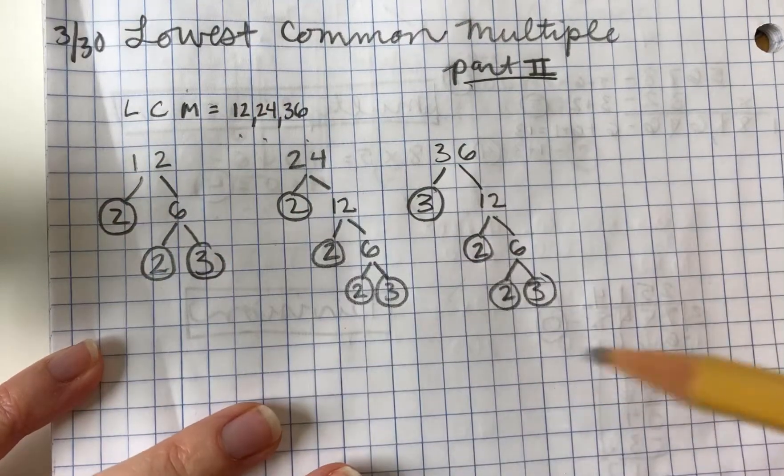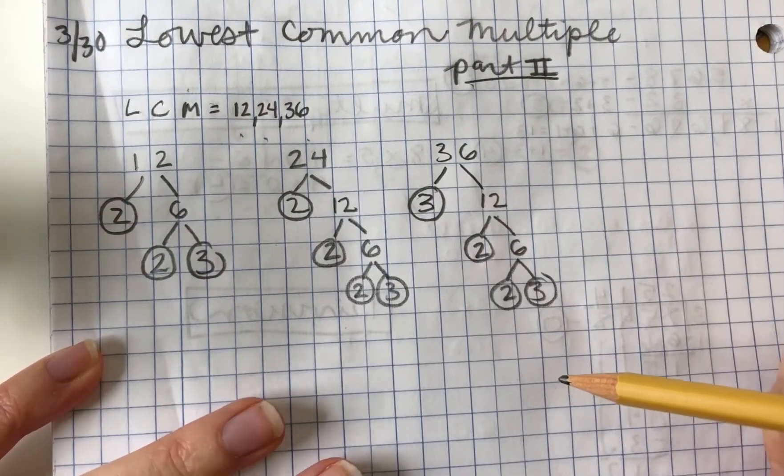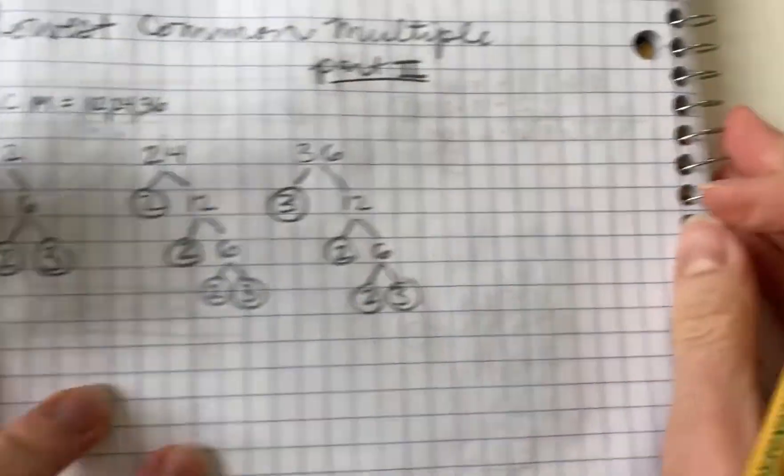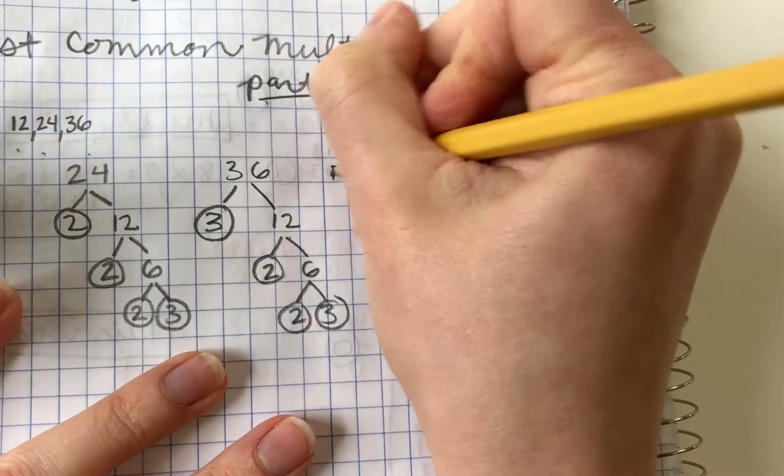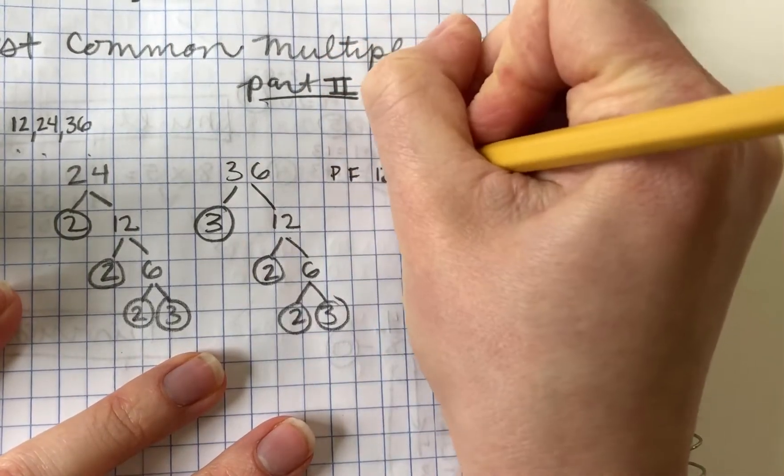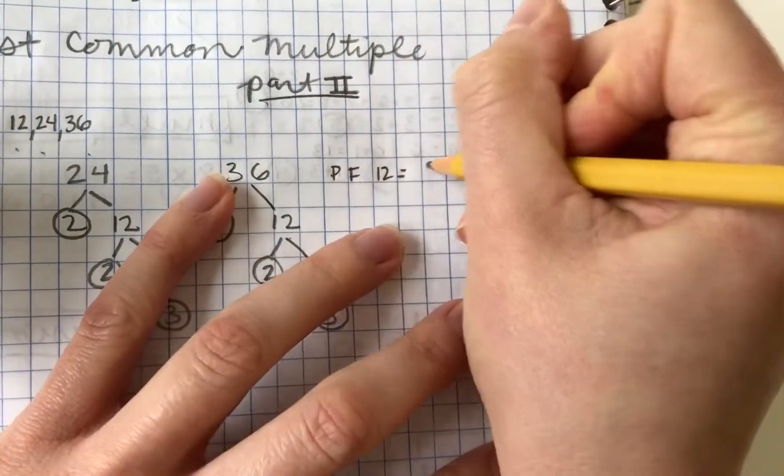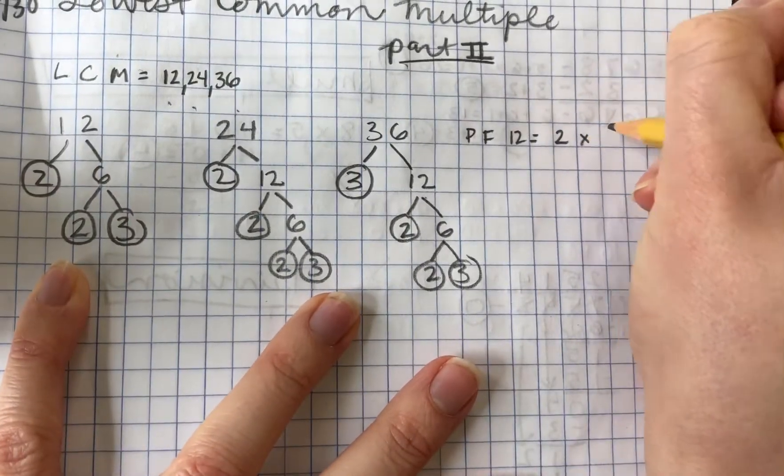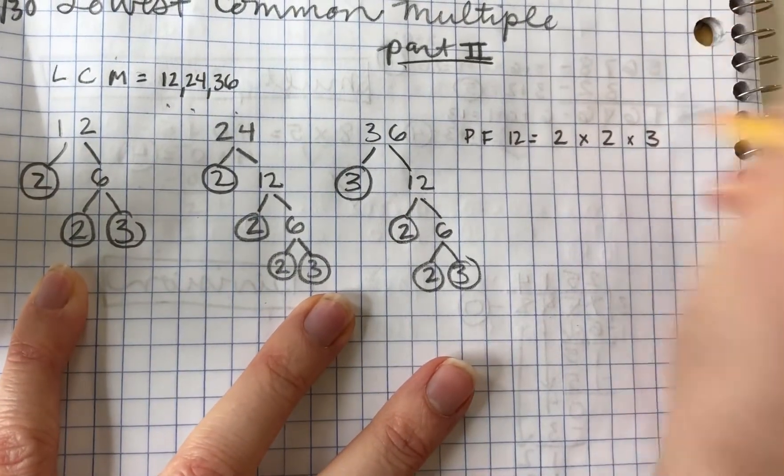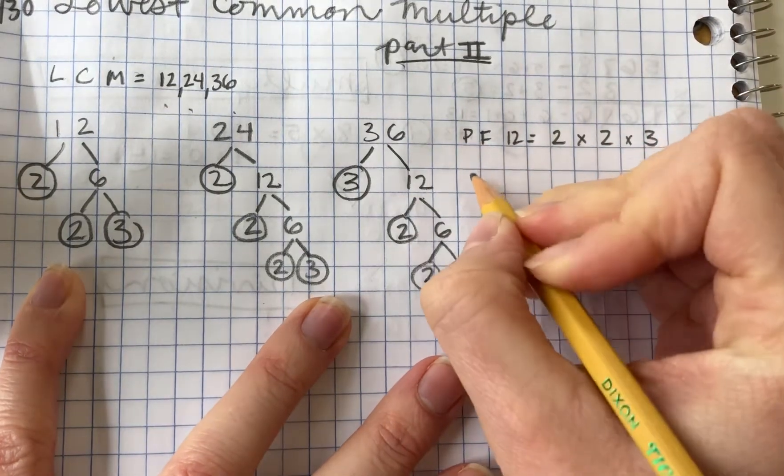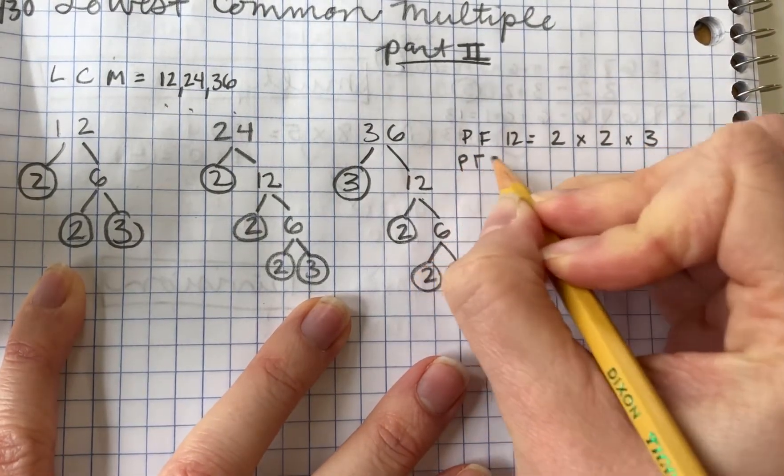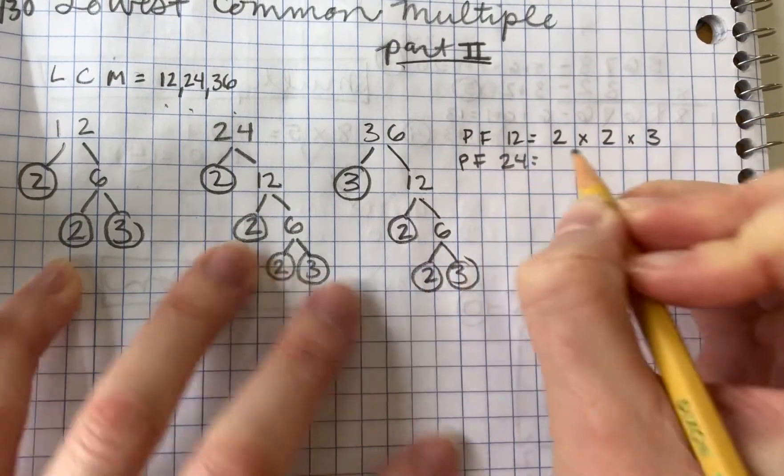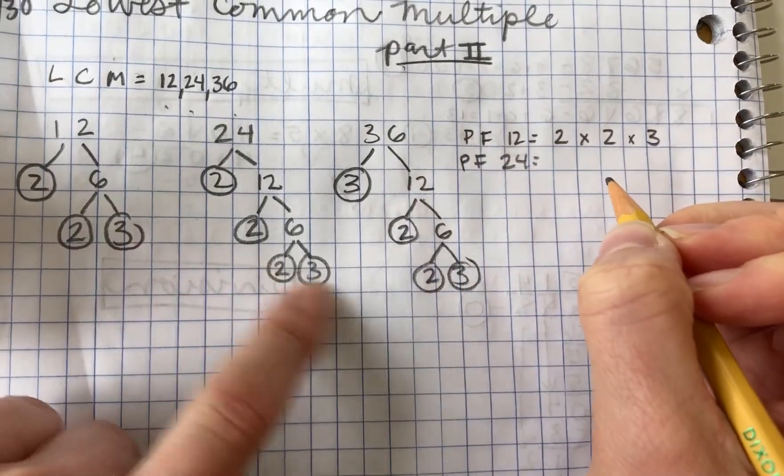So now that we have our factor trees and we see our prime factors, we're going to list out all of the numbers with their prime factors. So the prime factors of 12 are 2, 2, and 3. The prime factors of 24 are 2 times 2 times 2 times 3.